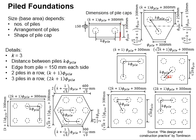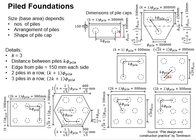The 300 mm accounts for 150 mm from each side, giving an edge distance from the pile edge to the pile cap side of 150 mm, which is the minimum required distance. On that basis of 150 mm on each side, the width of the pile cap equals the pile size plus 150 plus another 150, giving pile size plus 300 mm.